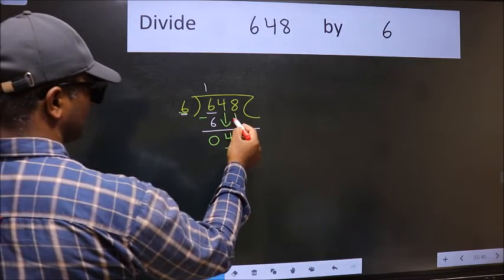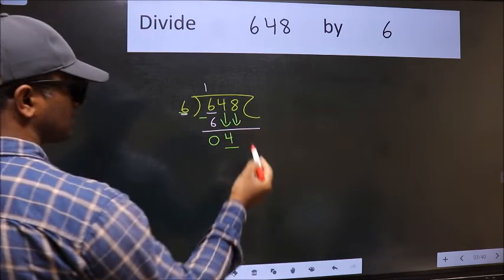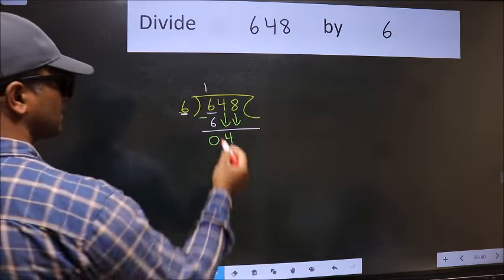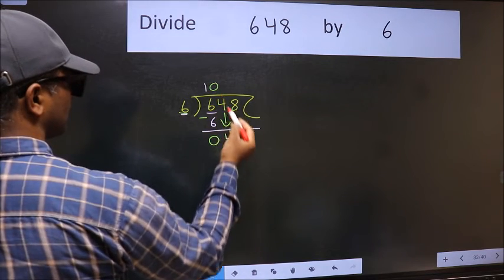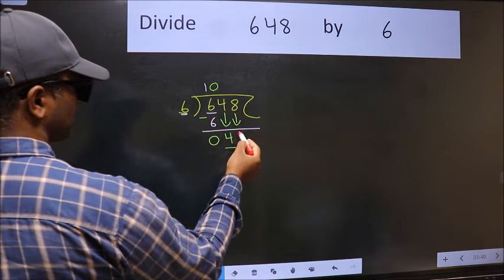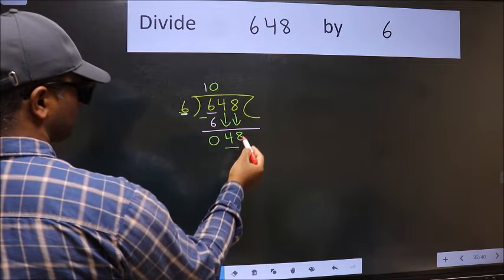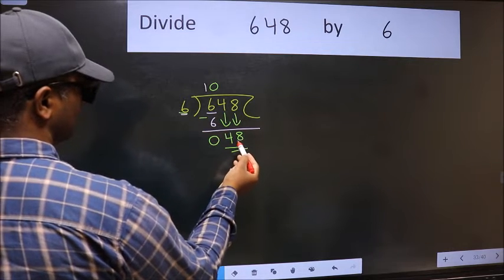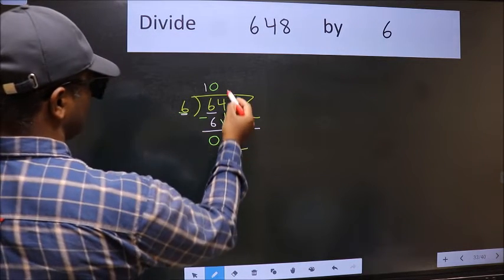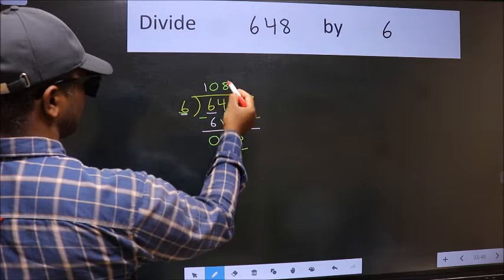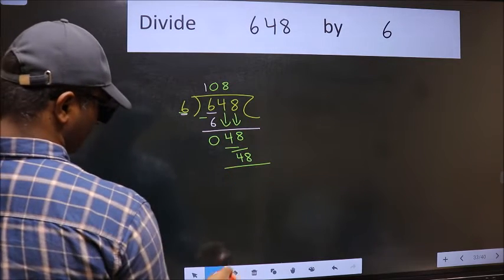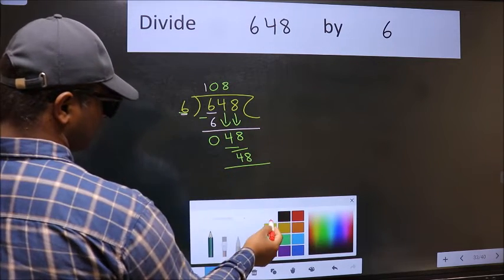The rule to bring down the second number is we should put 0 here — then only we can bring this number down. Now we have 48. When do we get 48 in the 6 table? 6 times 8 is 48.